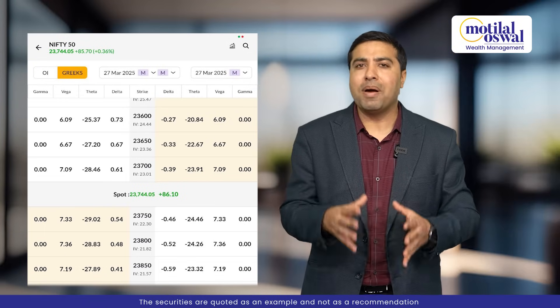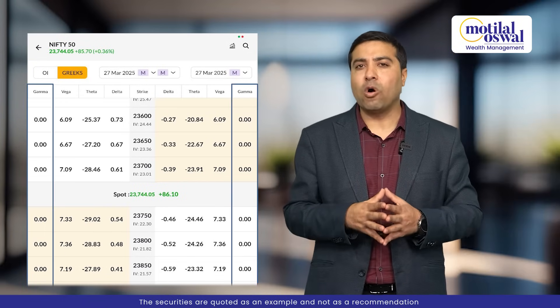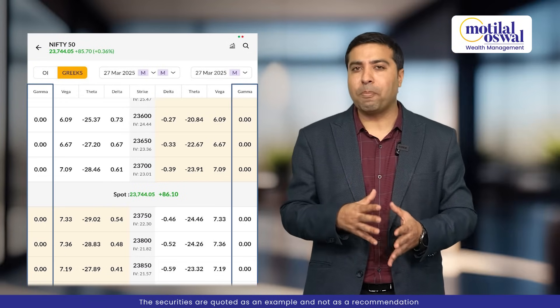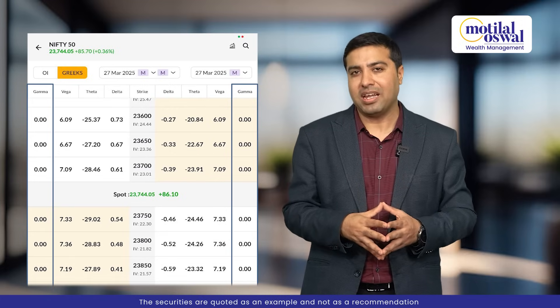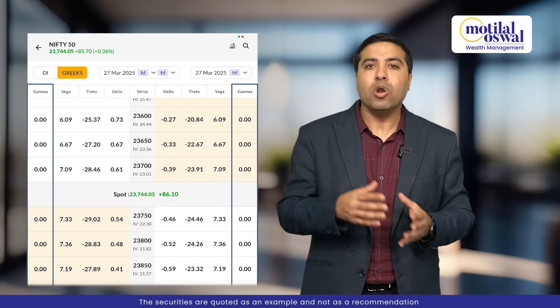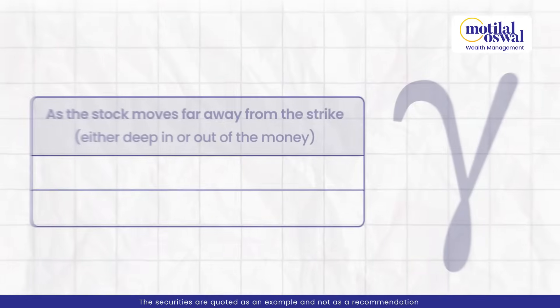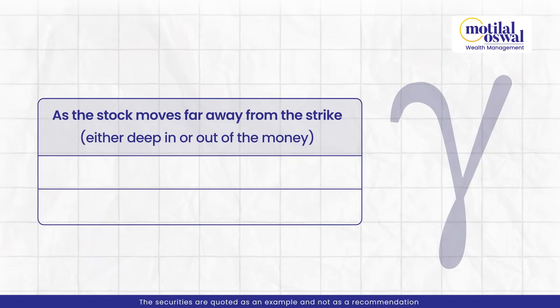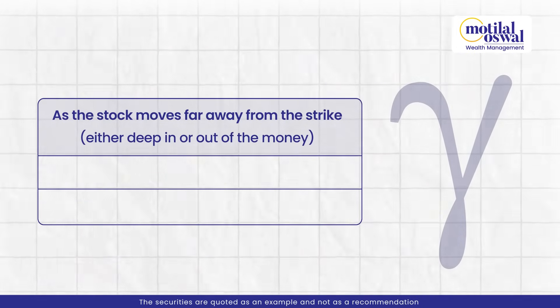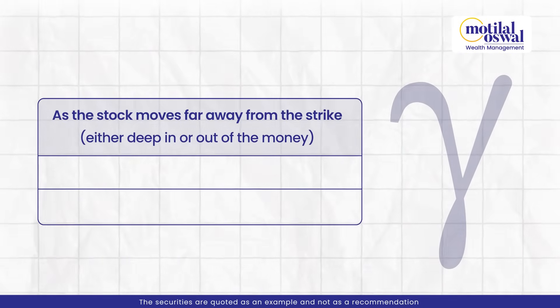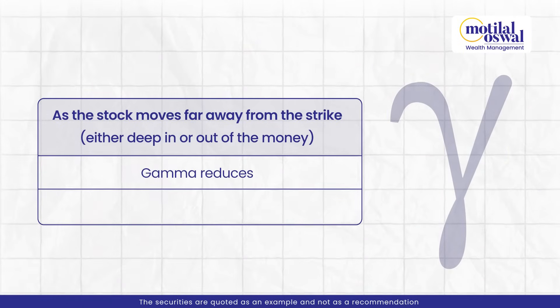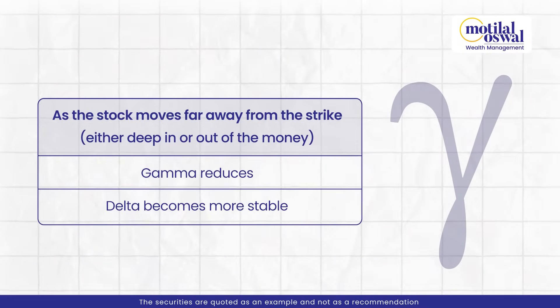Gamma is usually highest when the option is at the money, because when the price is very close to the strike, even a small move in the stock can flip the option to valuable. That's when Delta changes the fastest and Gamma is the highest. As the price moves far away from the strike — either deep in the money or out of the money — Gamma reduces and Delta becomes more stable.